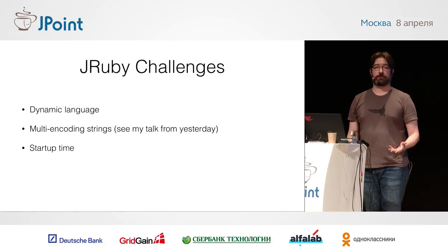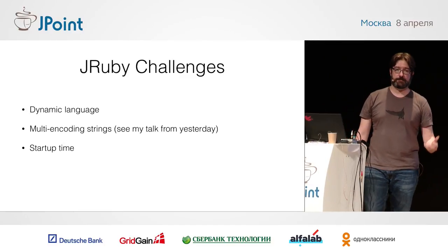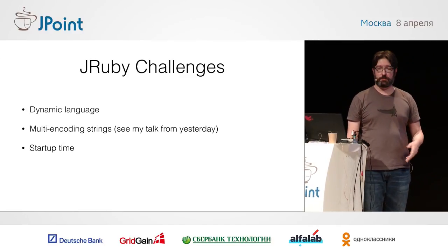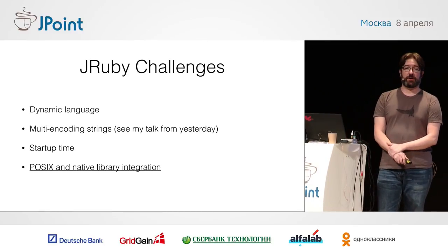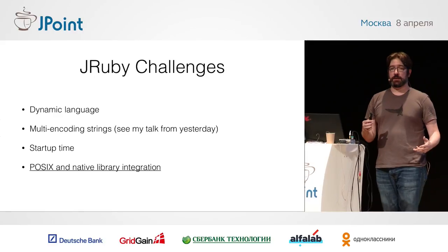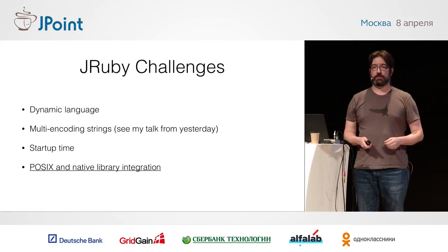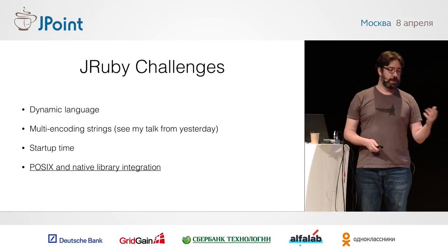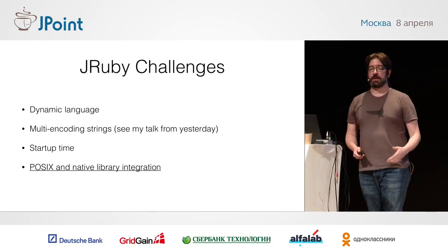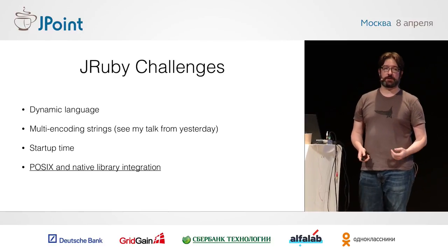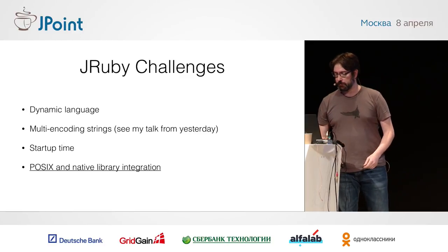Startup time has always been a continuous problem for us. We're hoping that the Java 9 work to add an ahead-of-time compiler to the JVM will help us get a little boost there. But today, we're going to be talking about native library integration. Ruby is a dynamic language that's kind of just written as a wrapper around C functions, so people expect to have POSIX behaviors and use native libraries directly from a Ruby application.